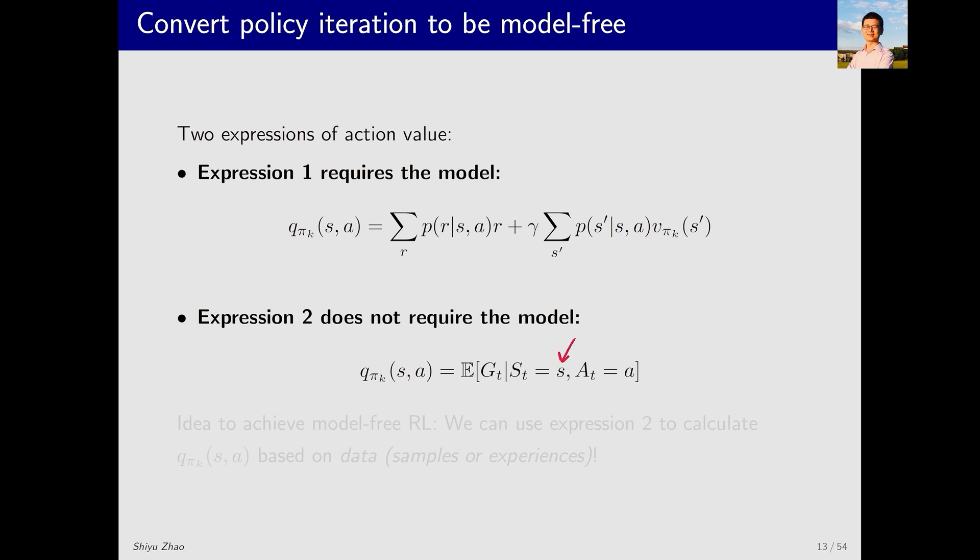Starting from state s, taking action a, and receiving a return, which is a random variable. We then compute its average or expectation. This is the action value's definition. So, what's the core idea behind model-free reinforcement learning and Monte Carlo-based methods? It's to utilize this equation. We discard the model-based equation and use this one that's model-free. What is this? It's a mean estimation problem. As we discussed in the motivating example, Monte Carlo estimation can be employed to solve mean estimation problems.